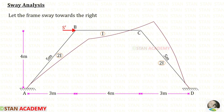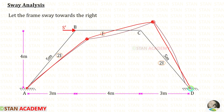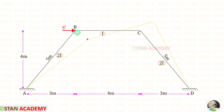We have finished the non-sway analysis. Now let us start the sway analysis. In the sway analysis, we remove all loads from the frame and let the frame sway towards the right, with S' as the force causing the sway. When sway occurs, the deformed shape is as shown. We connect joint B at the displaced point and make a vertical line to form a triangle. Let the inclined displacement be delta and the vertical distance be delta V.